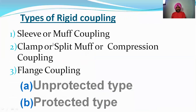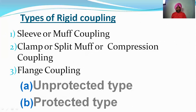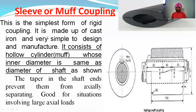Types of rigid coupling: the first and simplest is sleeve or muff coupling. Another category is clamp or split muff and compression coupling. The third type is flange coupling, which can be unprotected or protected. Let us now discuss the sleeve coupling.